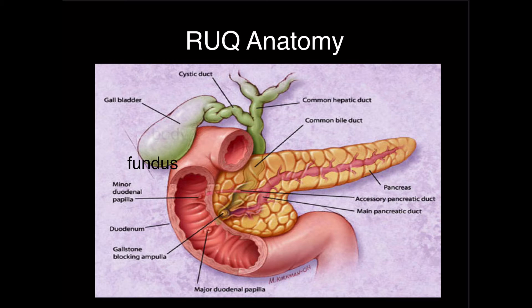First, we have the fundus, the body, and the neck of the gallbladder on the left of the screen. That connects to the cystic duct, which then connects to the common hepatic duct coming from the liver. The common hepatic duct and the cystic duct join to form the common bile duct, which courses just anterior to the portal vein within the portal triad prior to entering the duodenum. So that's what we look at to try and find the common bile duct.